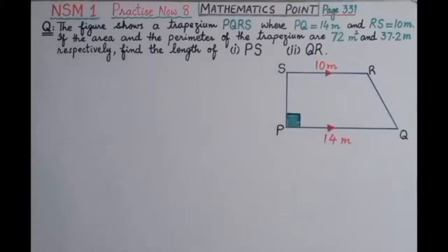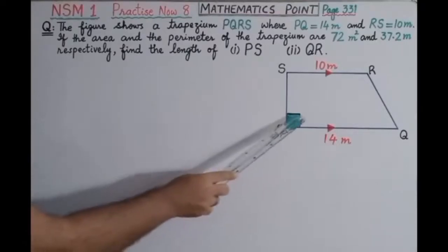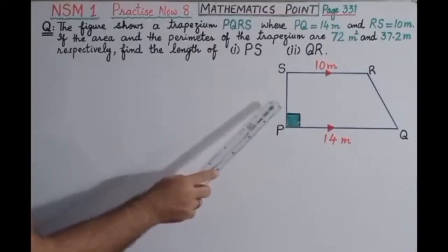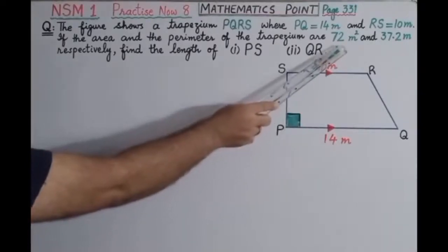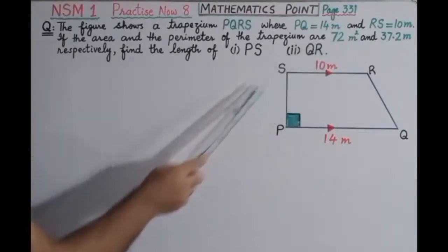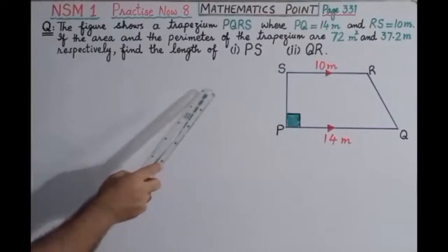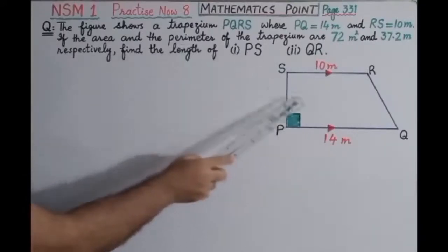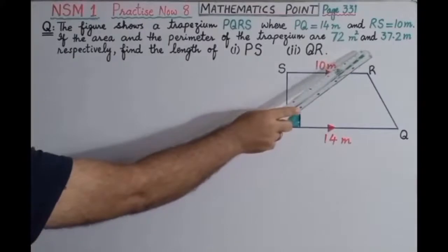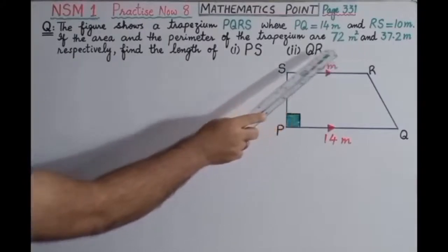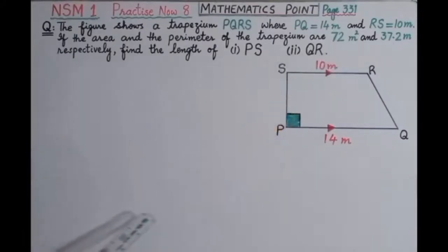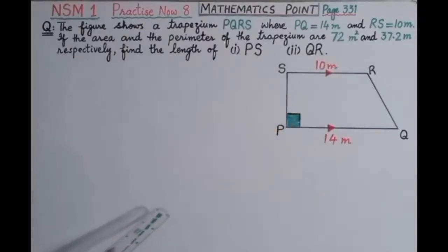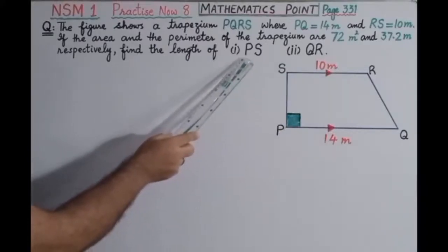We need to find the length of: number one, PS, and number two, the length of QR. The area of trapezium PQRS is given as 72 square meters and the perimeter is also given as 37.2 meters.